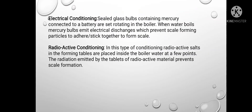Electrical conditioning — sealed glass bulbs containing mercury connected to a battery are set rotating in the boiler. When water boils, the mercury bulb emits an electrical discharge which prevents scale-forming particles from adhering or sticking together to form a scale. Fifth, radioactive conditioning — in this type of conditioning, radioactive salts in the form of tablets are placed inside the boiler water at a few points. The radiation emitted by the tablets of radioactive material prevents scale formation.